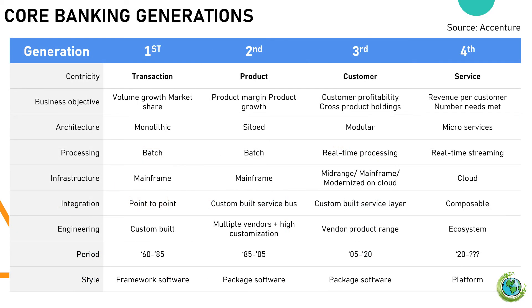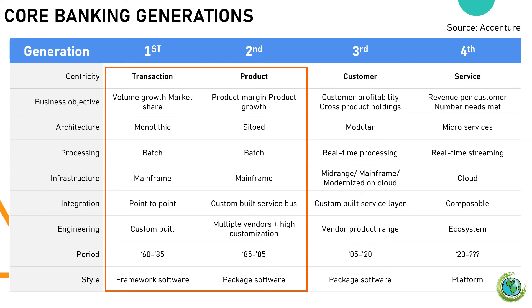Although not officially categorized, we can conceptualize core banking systems into four generations. The first two generations are very old-fashioned. The first generation, 1960–1985, focused on transaction processing with monolithic architecture, typically running on mainframe systems. The second generation, 1985–2005, focused on product-centric services with siloed architecture, continuing to run on mainframe systems.